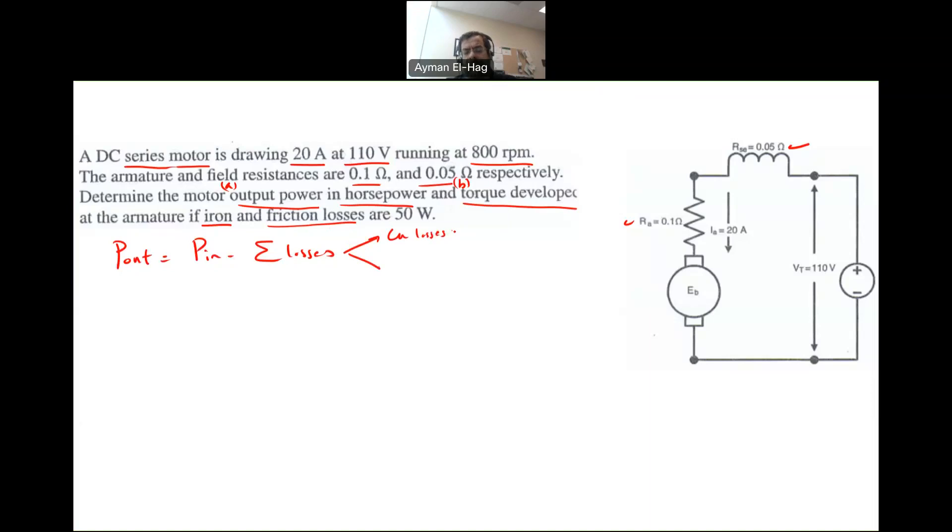And the rotational losses, which is basically the friction plus the core or the iron or the magnetic, all the same thing, which is the hysteresis and the eddy current losses.